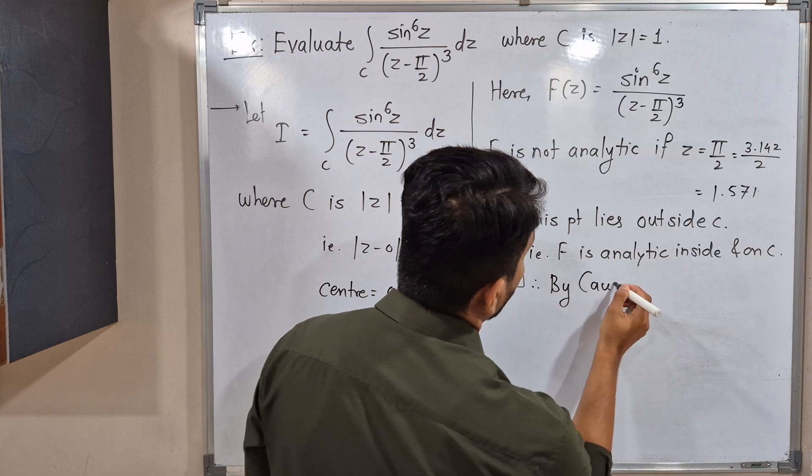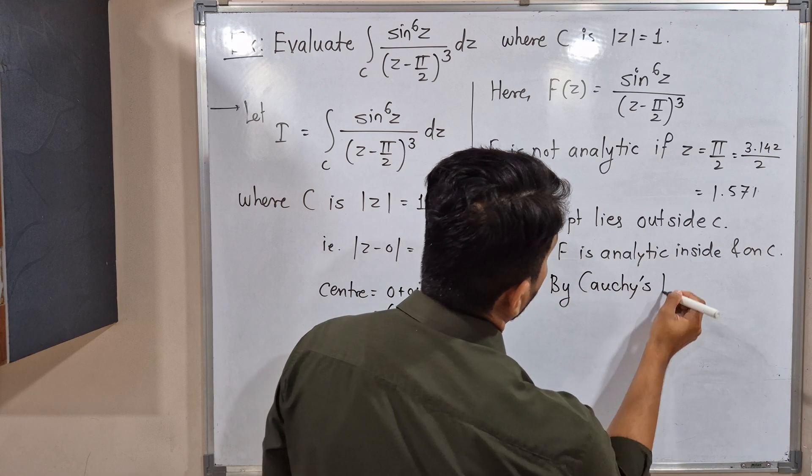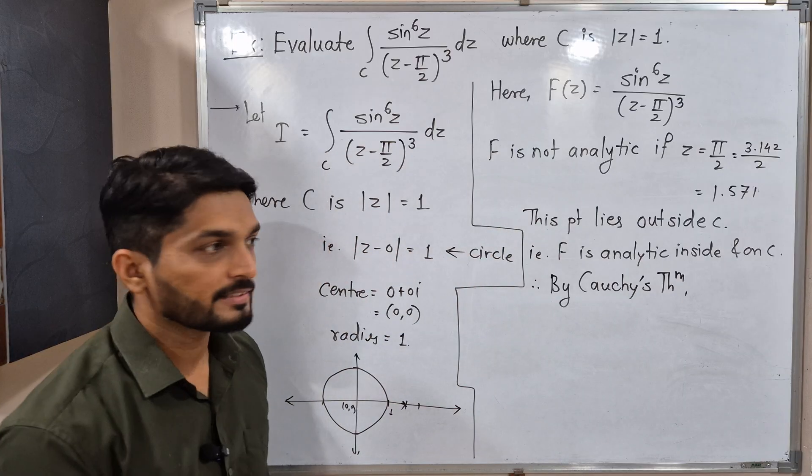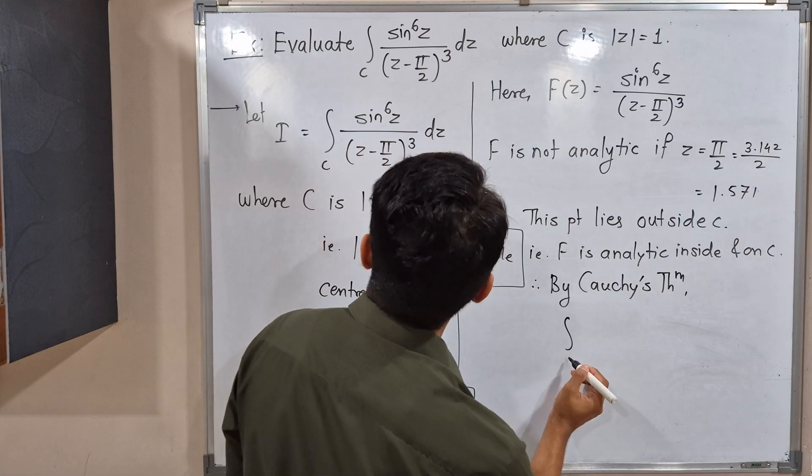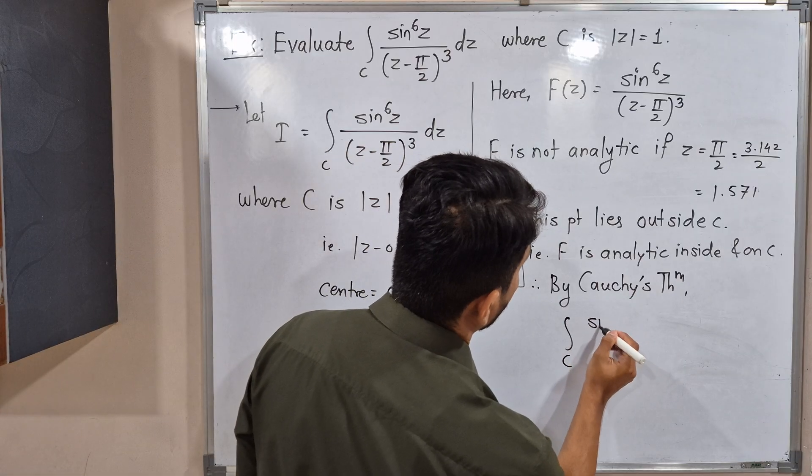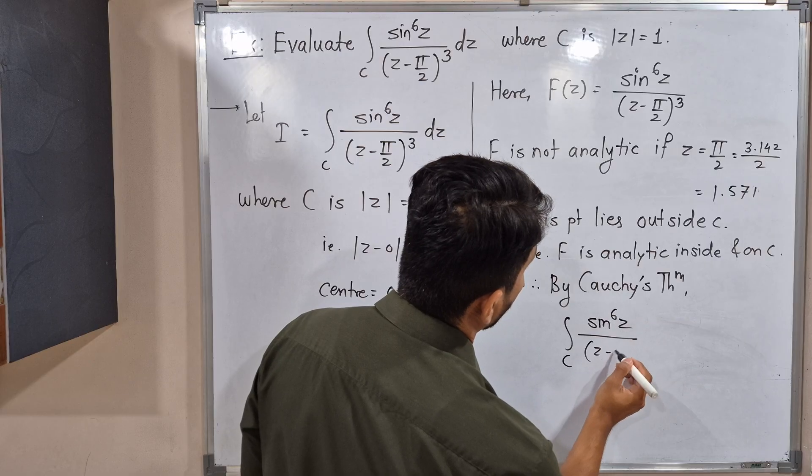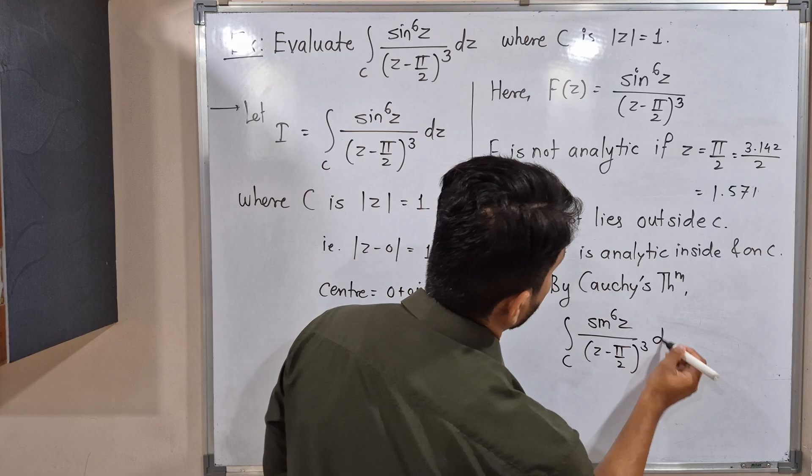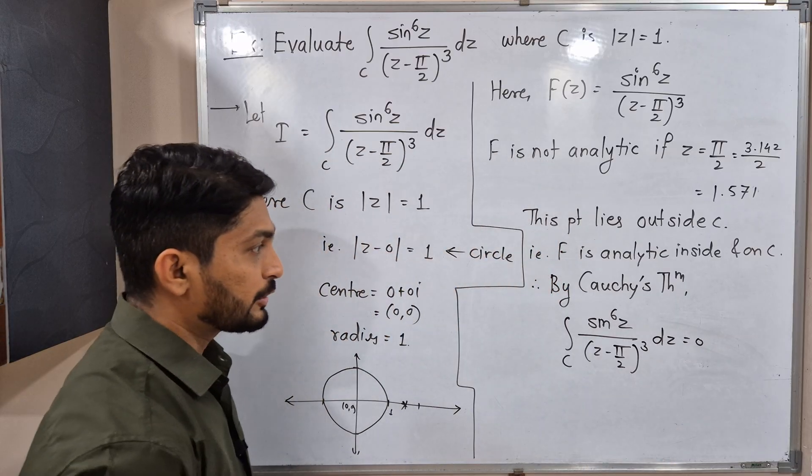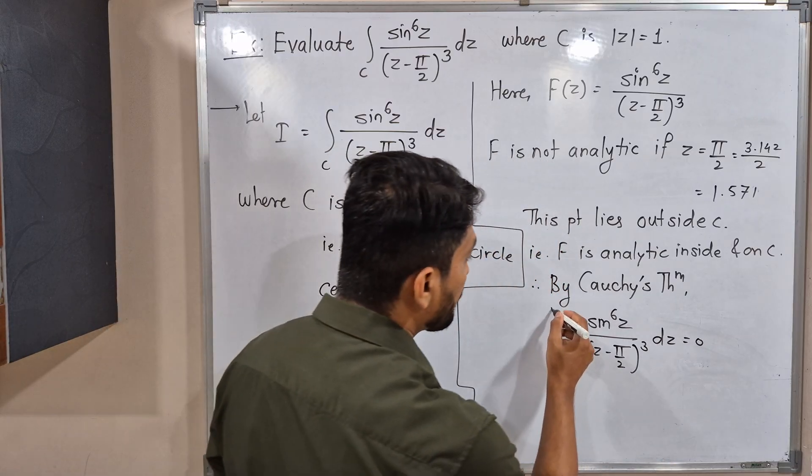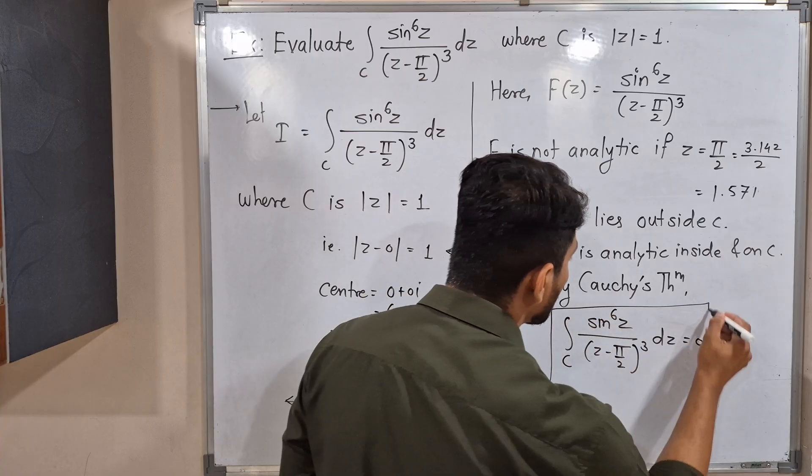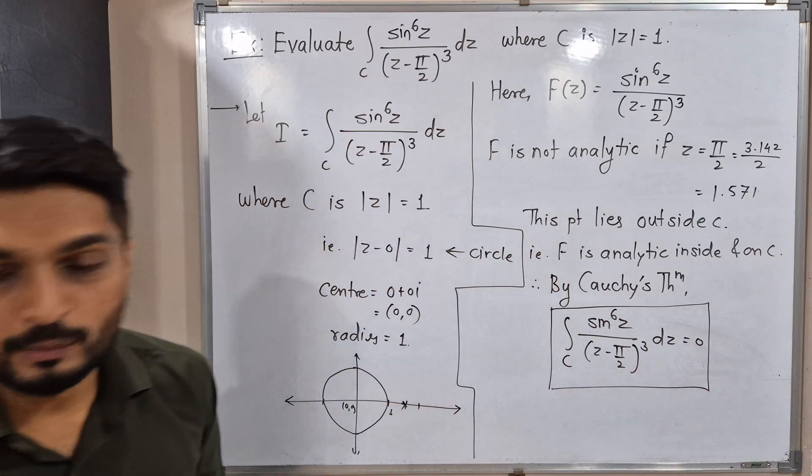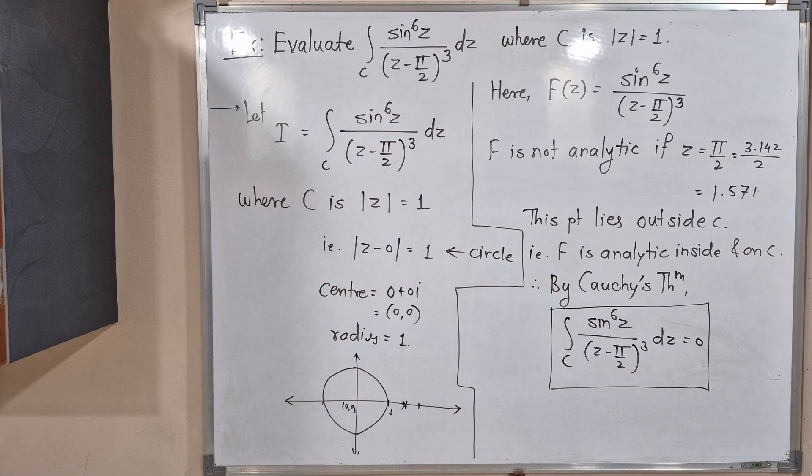Therefore, by Cauchy's theorem, the integration value is zero. So by Cauchy's theorem, the value of integration over C, sin raised to 6z upon z minus π by 2 raised to 3 dz, is zero. That's it, finished. Actually, initially the problem was looking difficult, but because of Cauchy's theorem we directly got its value and it is zero. The problem is over. Make a screenshot of it. Thank you, see you next video.